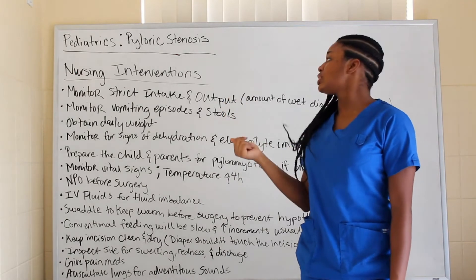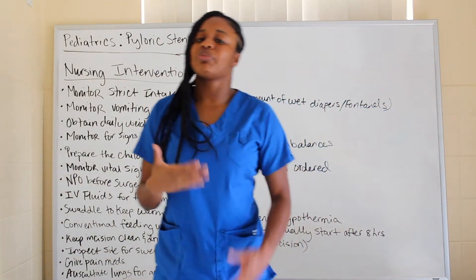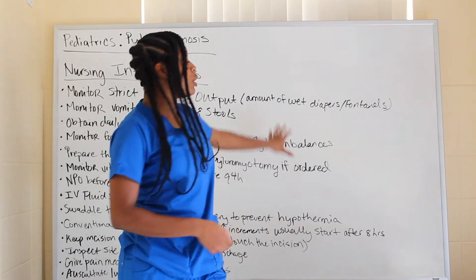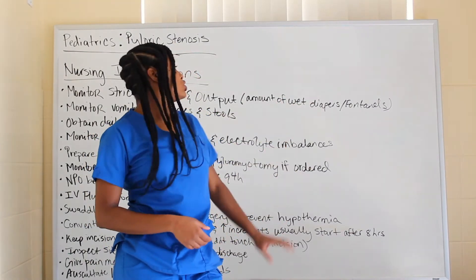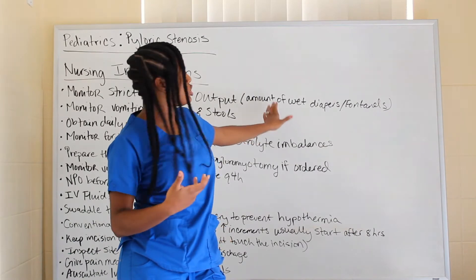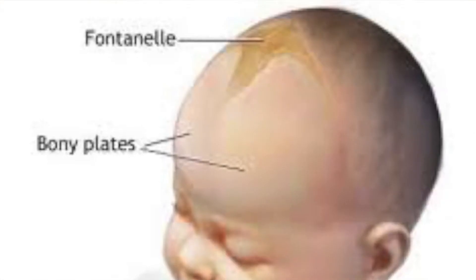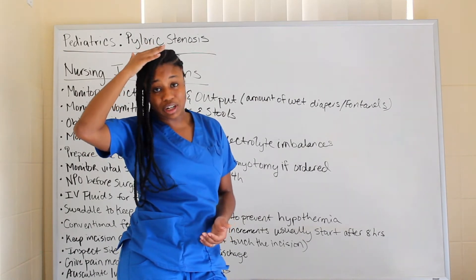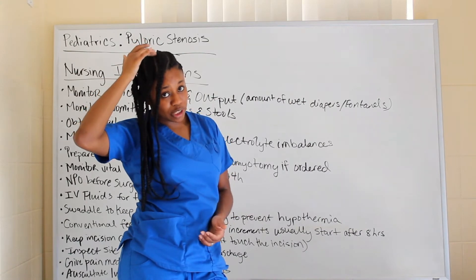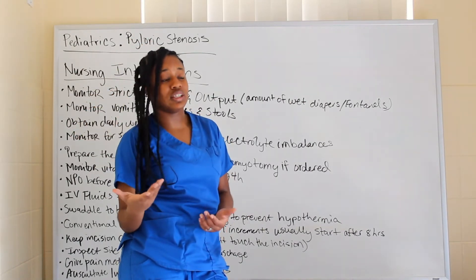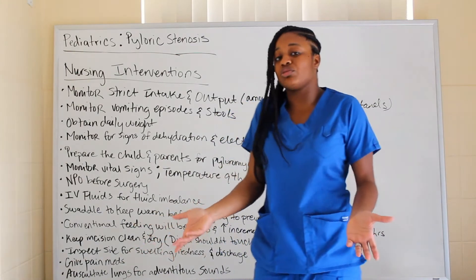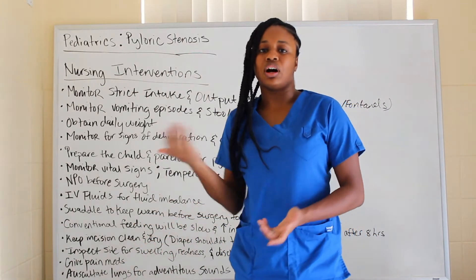For nursing interventions, you definitely want to monitor strict intake and output. Because pyloric stenosis starts within a few weeks of life, you're dealing with infants. You'll measure the amount of wet diapers and check the fontanelle at the top of the head — if it's sunken, that indicates dehydration. It should not be sunken; it's a soft spot that doesn't close until around 18 months.